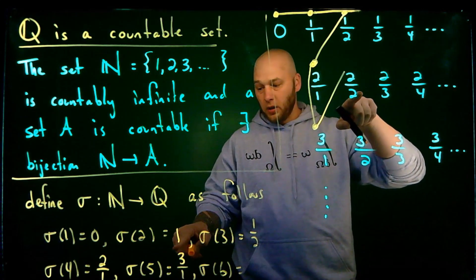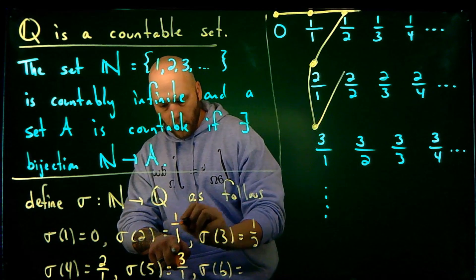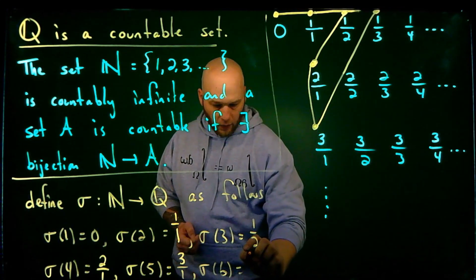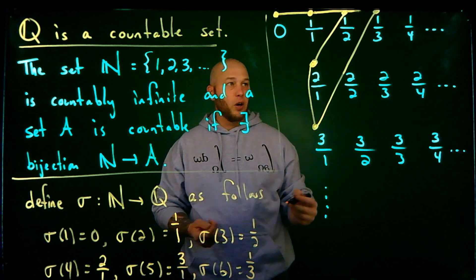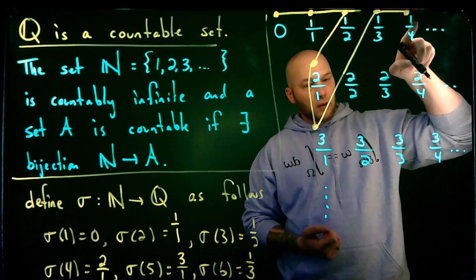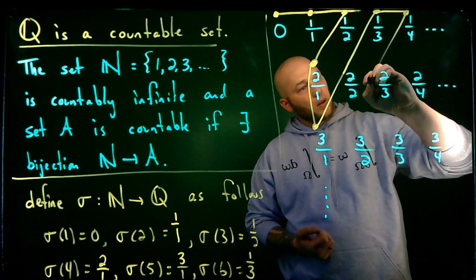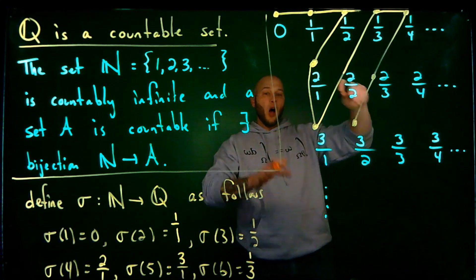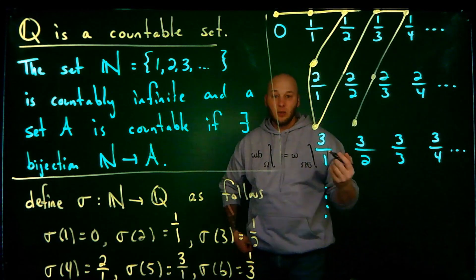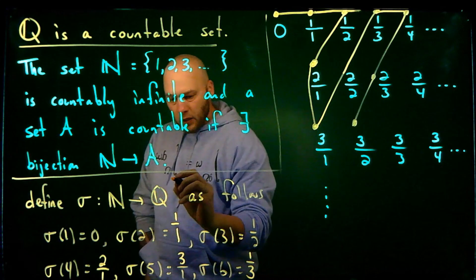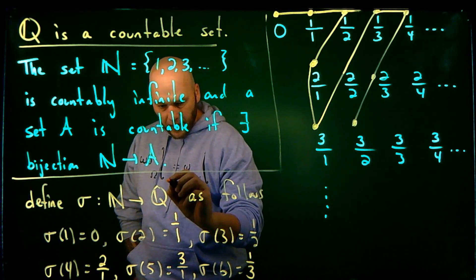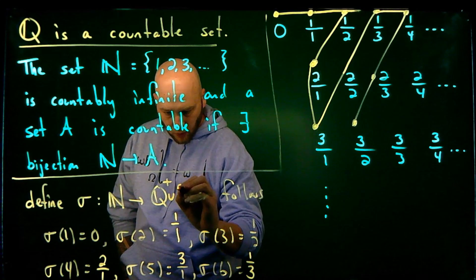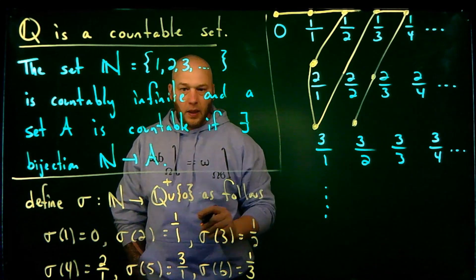Once I reach a number I've already used — for instance, 2/2 equals 1, and I've already used 1 as 1/1 — I skip it and move to the next one. So sigma of 6 would be 1/3, since I haven't used that yet. I continue going diagonally through the entire grid, skipping any repeats, and this defines a function from N to the positive rational numbers union zero.